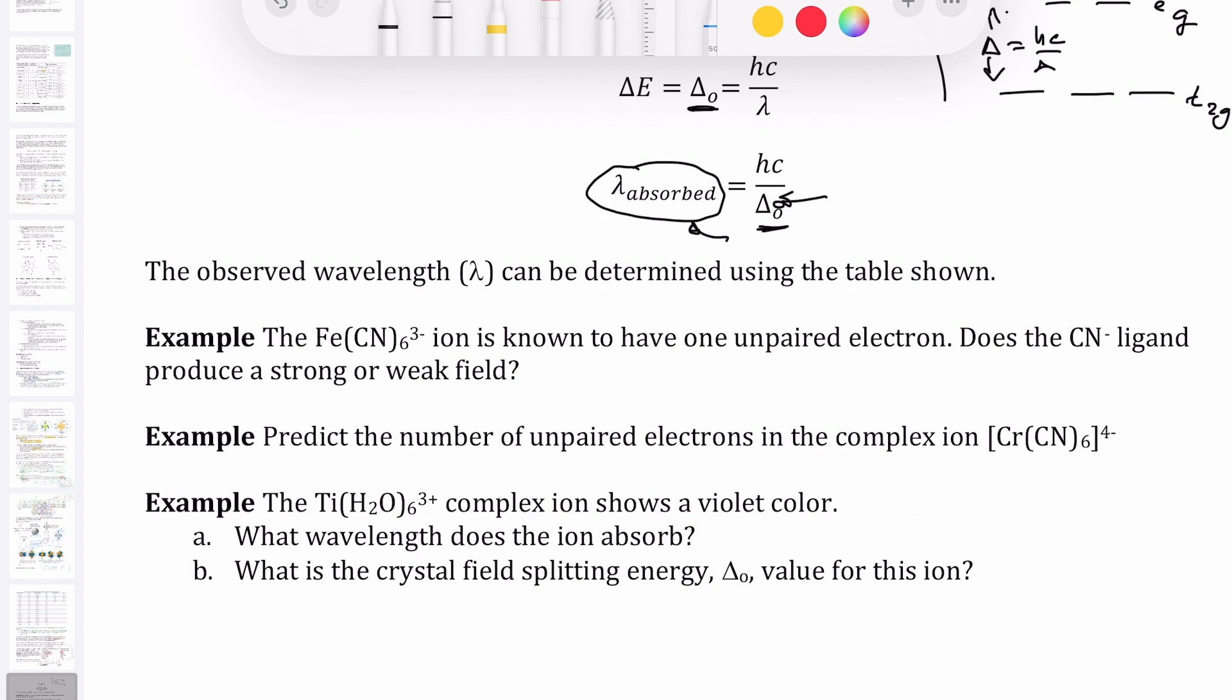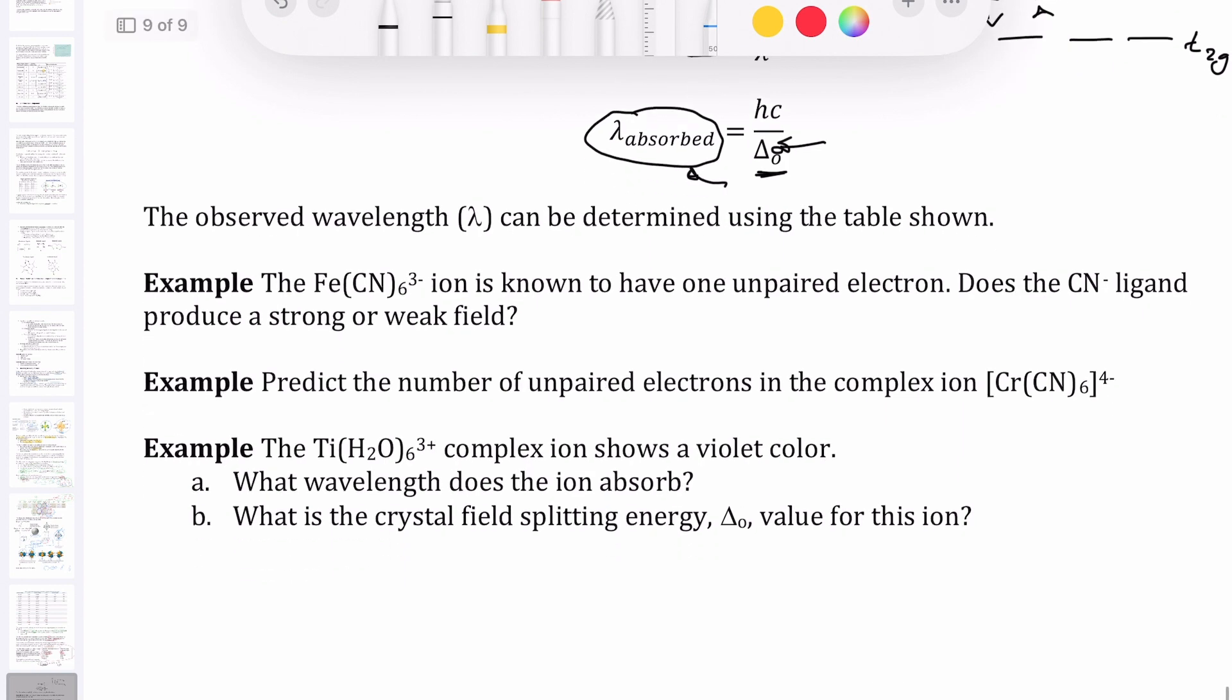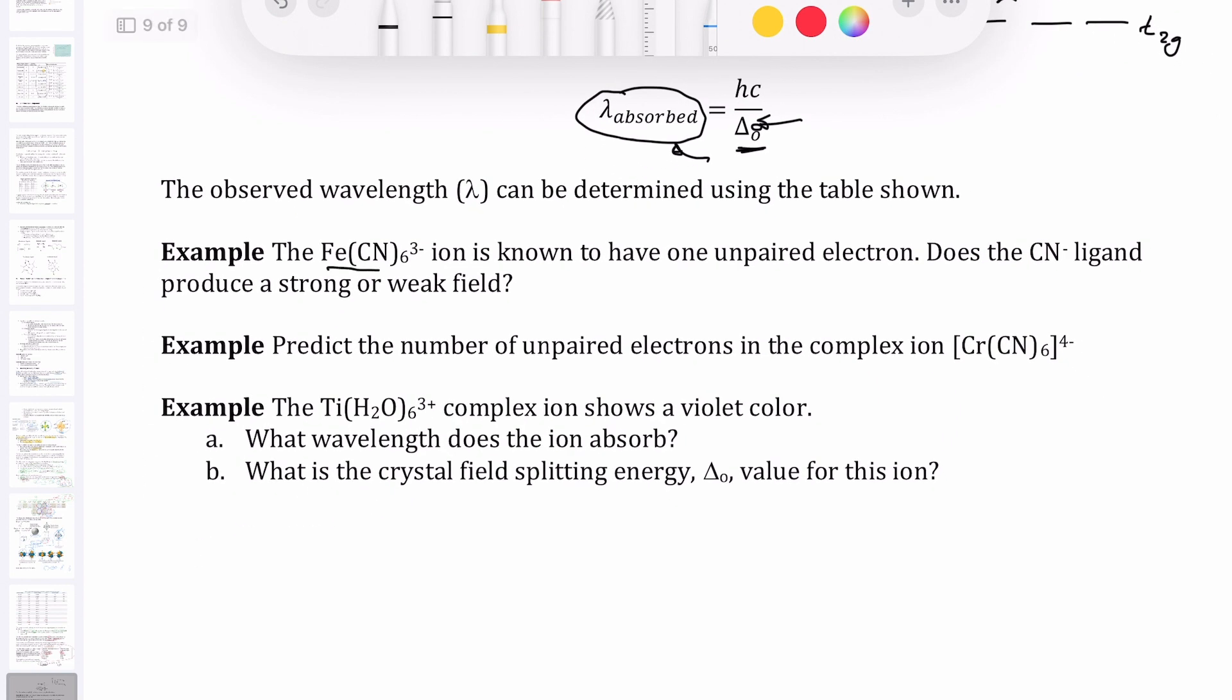I want to wrap up this discussion by doing a few examples using complex ion and crystal field theory. So the first one here, it says you have a complex ion. This is your cyano ferrite complex ion. It's known to have one unpaired electron. Question is, does the CN ligand produce a strong or weak field?